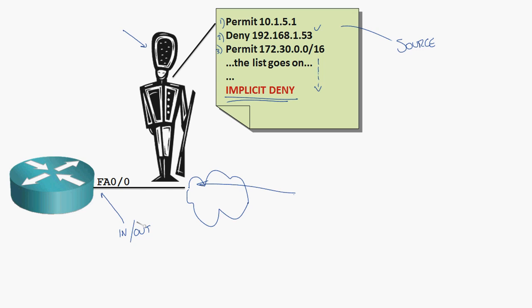Inbound means traffic is coming into the router from that interface. Put yourself in the role of the router — hold out your arm, there is your interface, traffic is coming in. If it's coming in from the internet, would private IP addresses show up there? Chances are no — they're private IP addresses. Outbound means traffic is going out of that interface. When you apply a standard access list, the direction really counts.